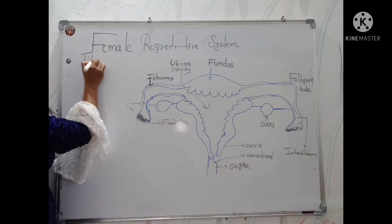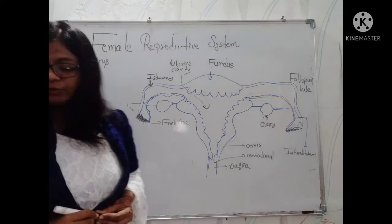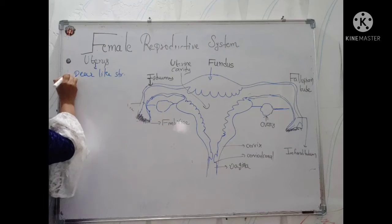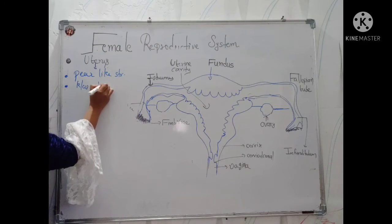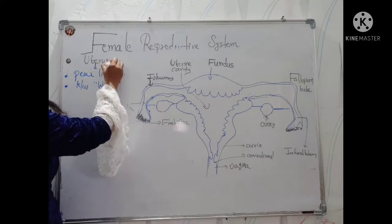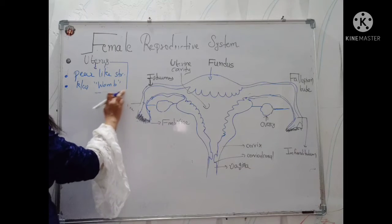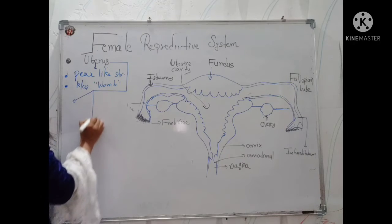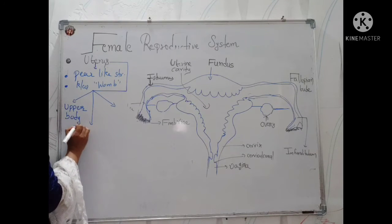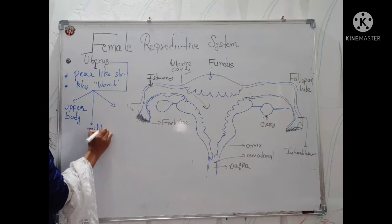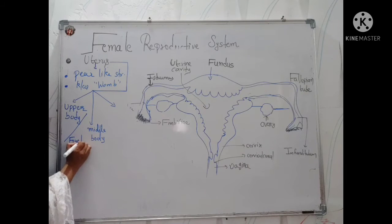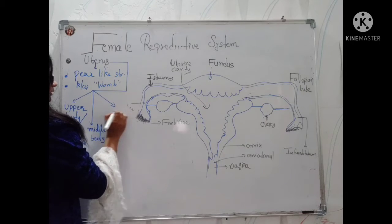So among the secondary sexual organs, first we are going to talk about the uterus. The uterus is a pear-shaped structure; in other words we also call it the womb, or mother's womb, in which fetal development happens. The uterus consists of three compartments: the upper body of the uterus, which is called the fundus, the middle body, and the cervix.